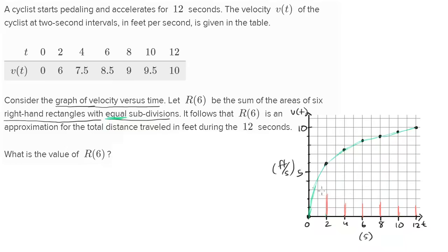For example, this first rectangle — to make it a right-hand rectangle, we look at the right side: we're at two seconds, and velocity at two seconds is 6 feet per second. So that's going to be the height of our rectangle. Now, a left-hand rectangle would be different: for the first rectangle, the function on the left-hand side is zero, so it's just zero. Then the next rectangle's left-hand side, the function at two seconds is 6. So the left-hand rectangles would look like that. But they're telling us to do right-hand rectangles, so let's do that.